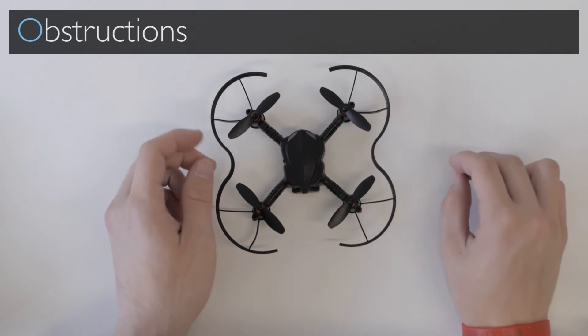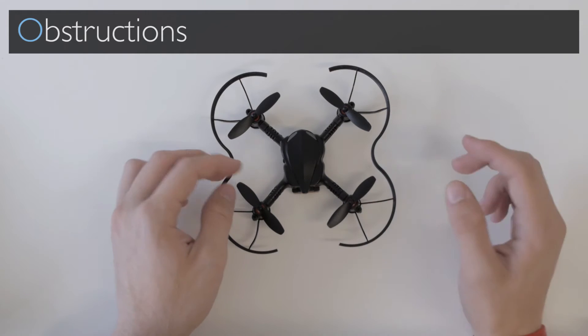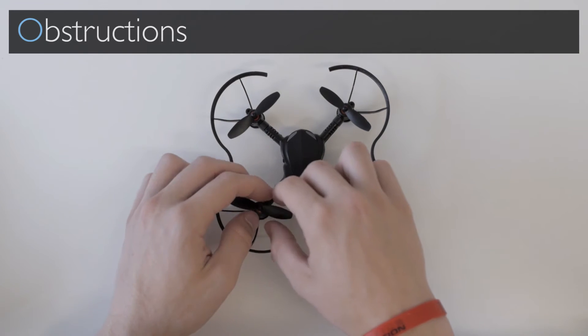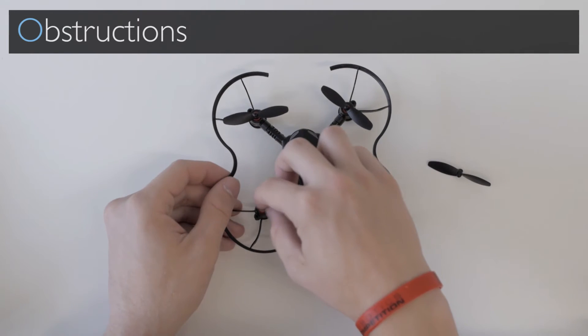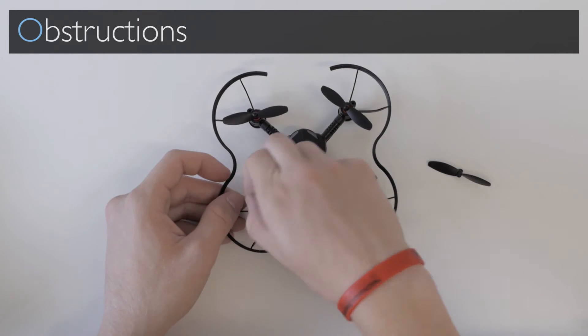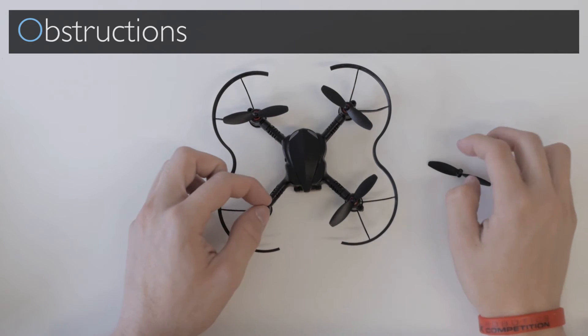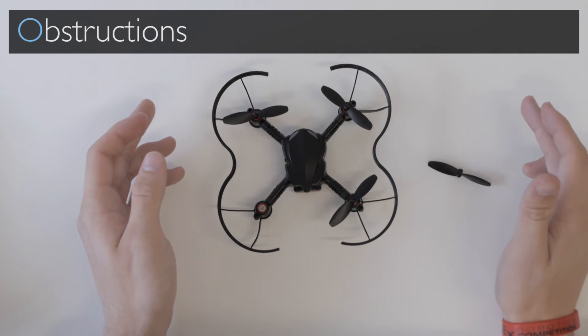Next, check if there are any obstructions in the motor shafts. To do that, pull off a propeller and check the shaft right here to see if there are any hairs, because those get tangled really easily,